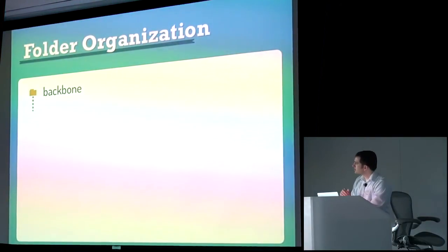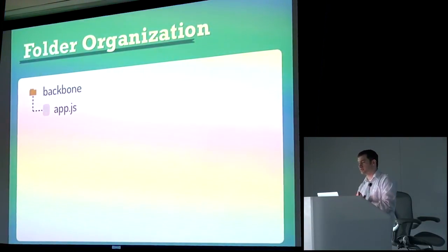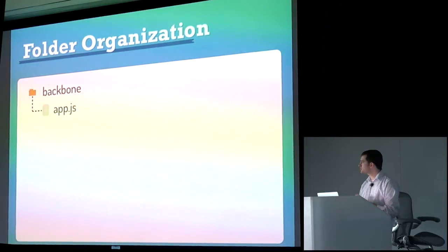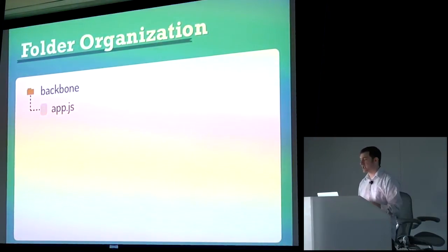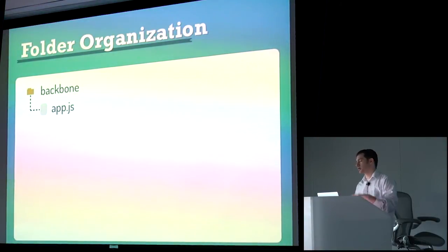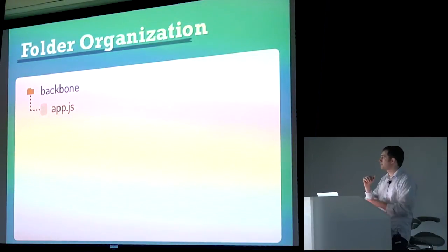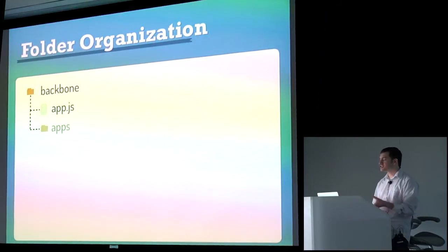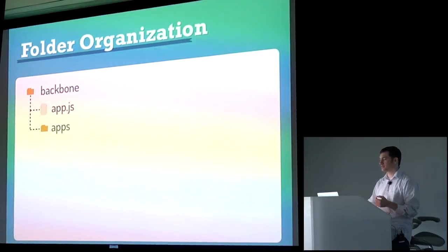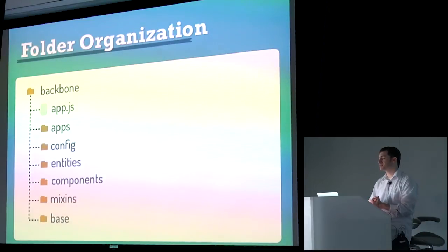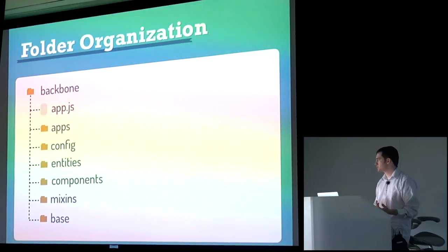So let's talk about folder organization, because this is kind of where it all comes together. We have a root Backbone folder with an app.js file where you define that application instance and set up all the application instance stuff. Then you'd have an apps directory where all your working app modules go — all the user-facing things. Then everything else are siblings: all the shared utilities — config, entities, components, mixins, maybe base classes that you'll override and extend everything else from.